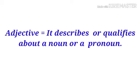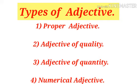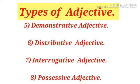Without wasting time, let's start the video. Adjective is divided into eight kinds: number one is proper adjective, number two is adjective of quality, number three is adjective of quantity, number four is numeral adjective, number five is demonstrative adjective, number six is distributive adjective, number seven is interrogative adjective, and the last one is possessive adjective.